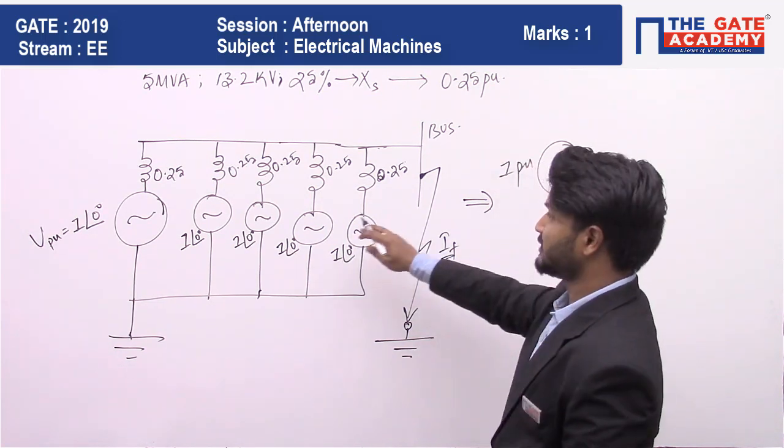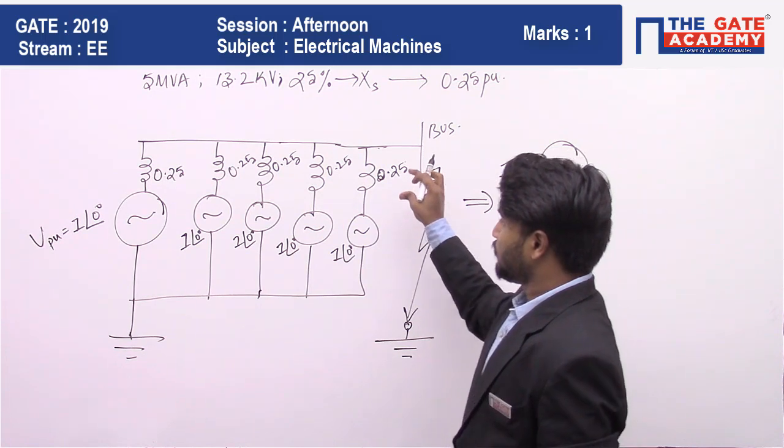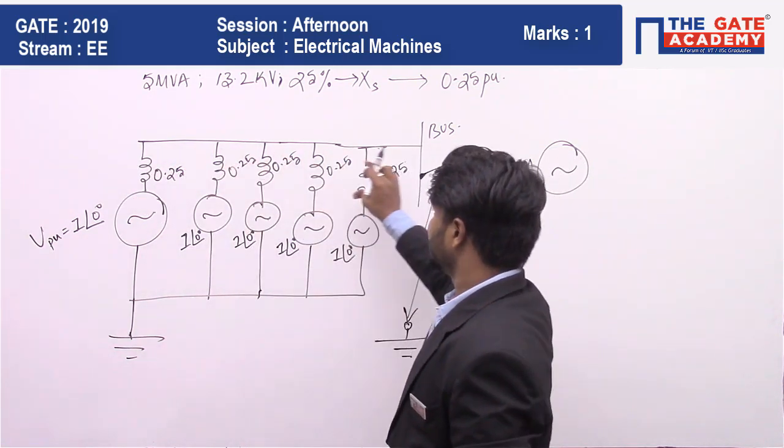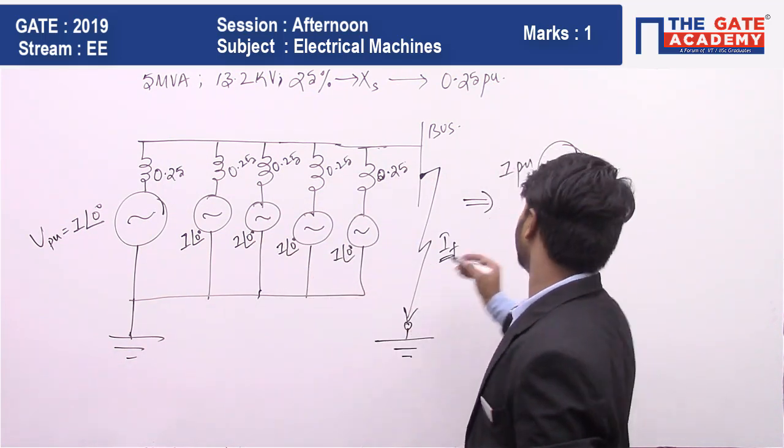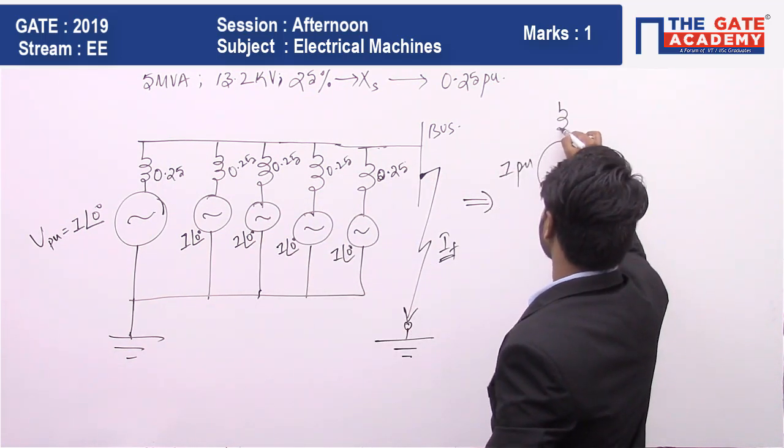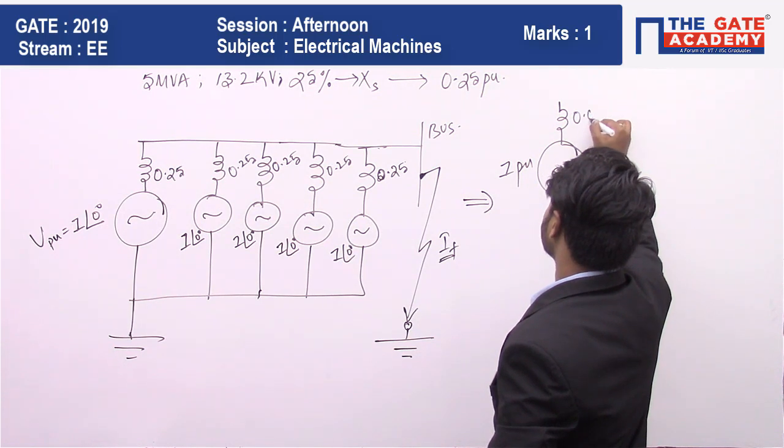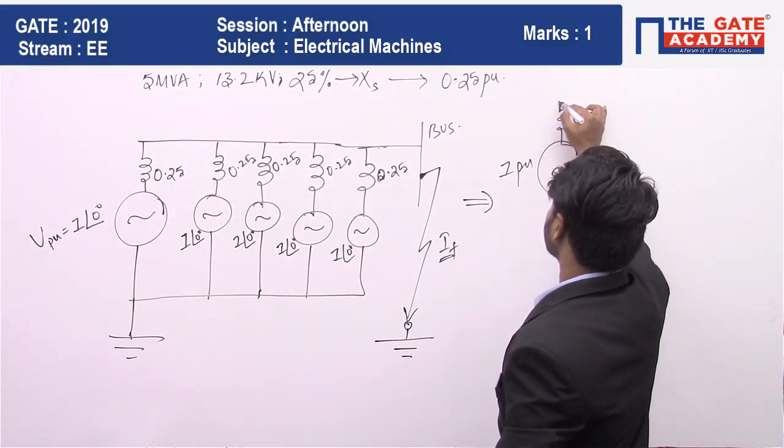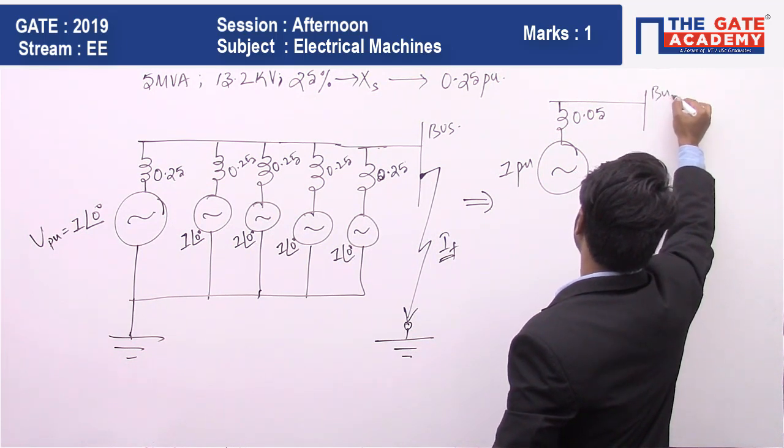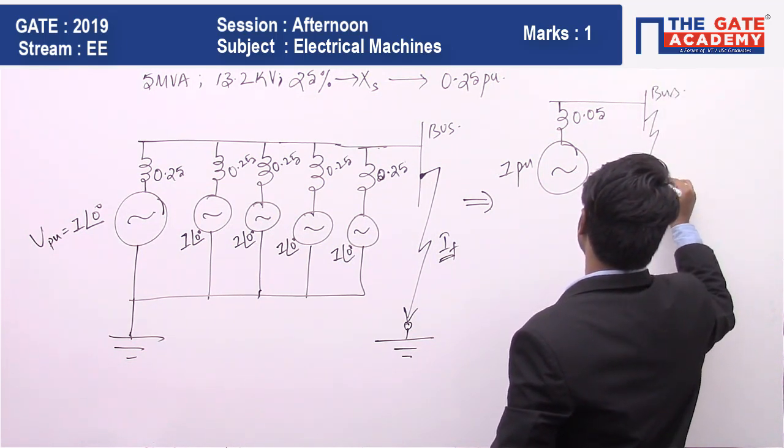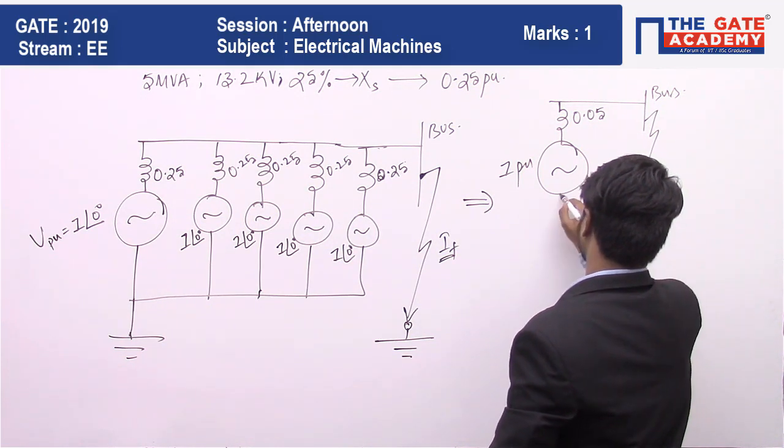Single voltage source with 1 per unit as its voltage, and five reactances in parallel—0.25 divided by 5, you will get 0.05. Five reactances in parallel connected to the bus, and fault level in MVA we need to find out.